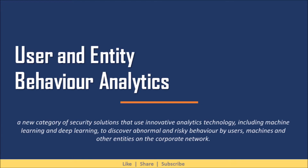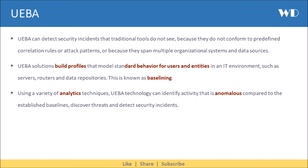UEBIA is a new category of security solutions which use innovative analytics technology, including machine learning and deep learning, to discover abnormal and risky behavior by users, machines, and other entities on the corporate network. UEBIA can detect security incidents that traditional tools do not see, because they do not conform to predefined correlation rules or attack patterns, or because they span multiple organizational systems and data sources.